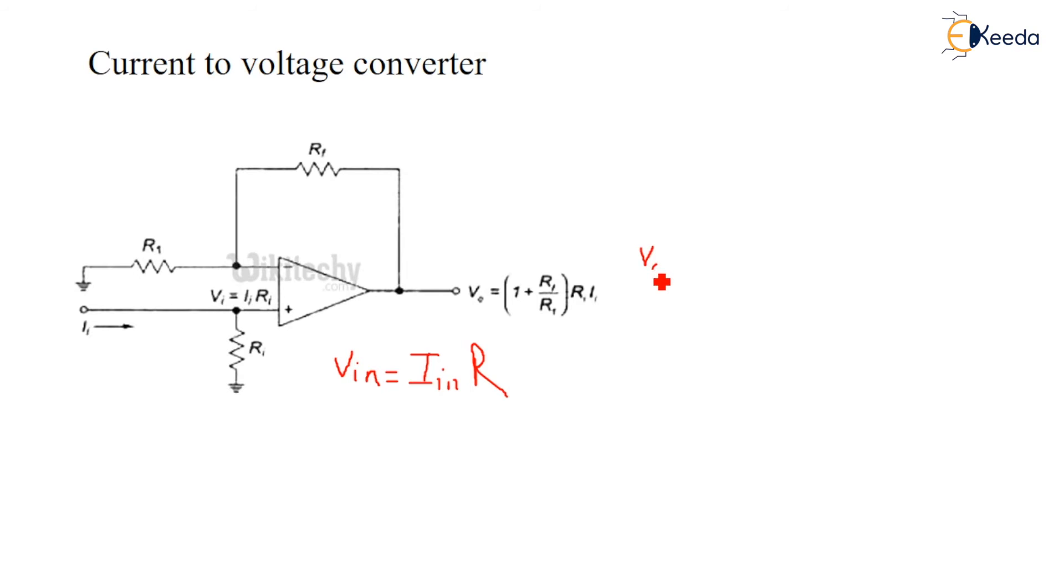VOUT is equal to, gain is equal to gain I say A into VIN. So instead of this VIN, I can substitute IIN. I'll substitute this IIN.